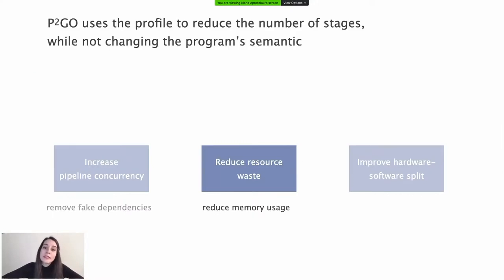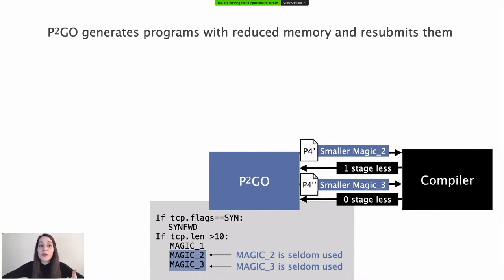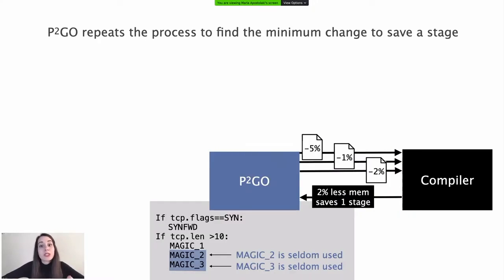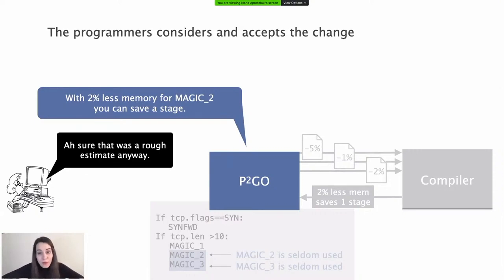After removing the potential fake dependencies, P2Go searches for opportunities to shorten the pipeline by slightly reducing the memory of any table. This opportunity might arise due to the programmer's lack of knowledge of the underlying architecture — for example, ignoring the amount of available memory per stage. P2Go first finds the tables least used by packets during profiling, then generates code with reduced memory on those tables and probes the compiler to check if the reduction has a collateral effect on the number of stages. P2Go finds that it can save a stage by reducing the memory allocation of Magic 2 by only 2%, which the programmer happily accepts since his initial memory choice was only a rough estimate.